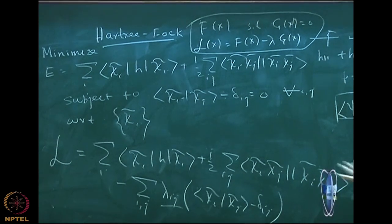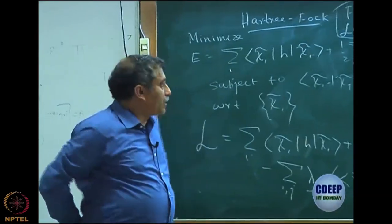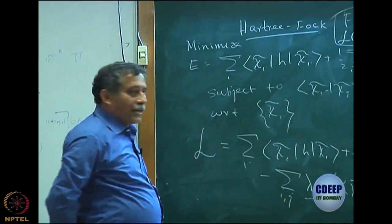So, this is where we are going to start now. So, this is my function which I am going to minimize with respect to chi i tilde and lambda i j.